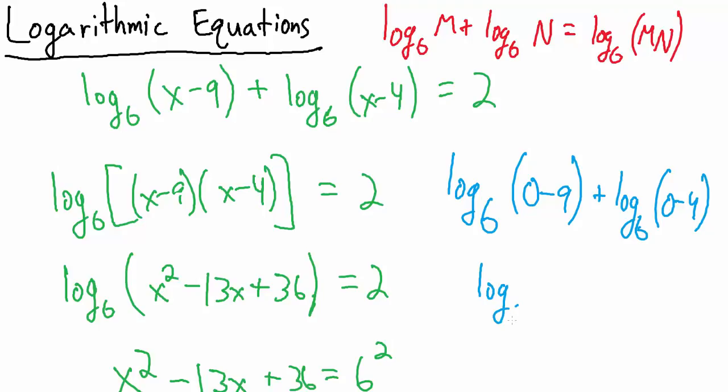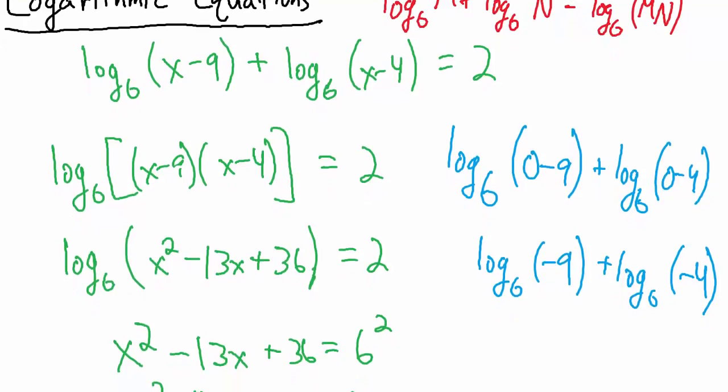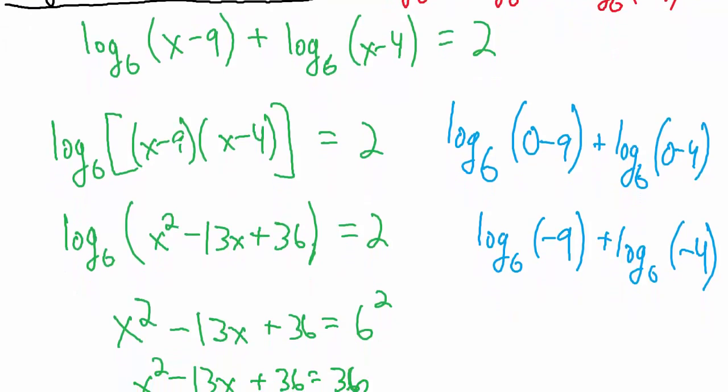So we get base 6 log of negative 9 plus the base 6 log of negative 4. And this is actually very bad because remember when we first introduced logarithms we talked about the domain, what we're allowed to put inside of a log, and we are not allowed to put negative numbers inside of logs. So this is a huge no-no.